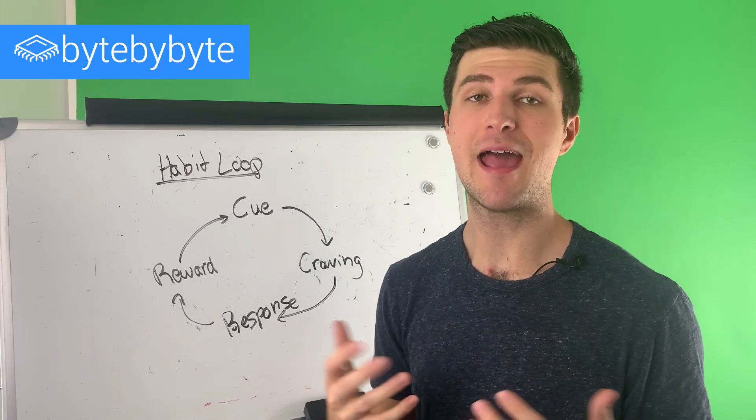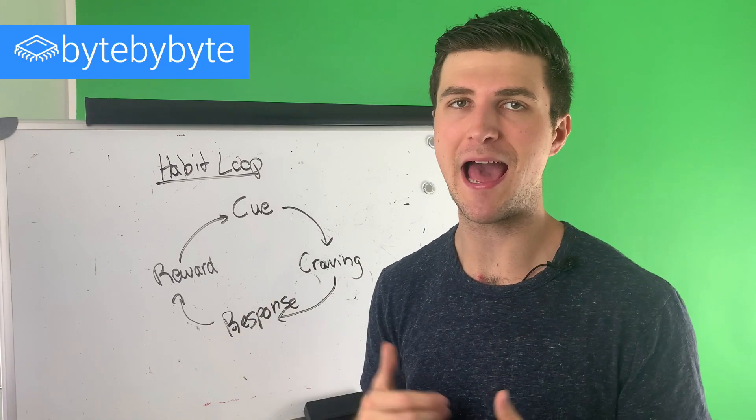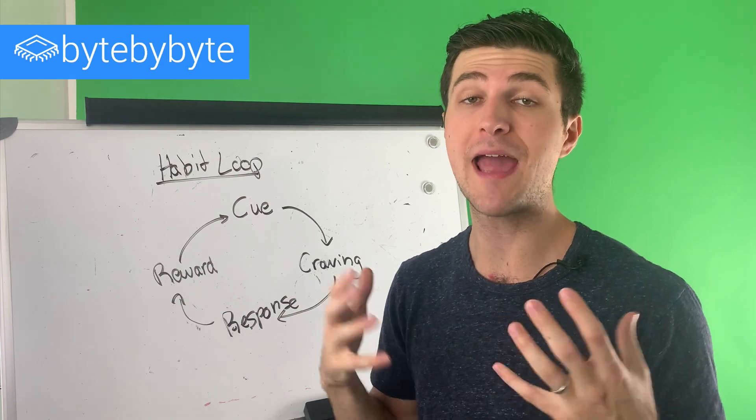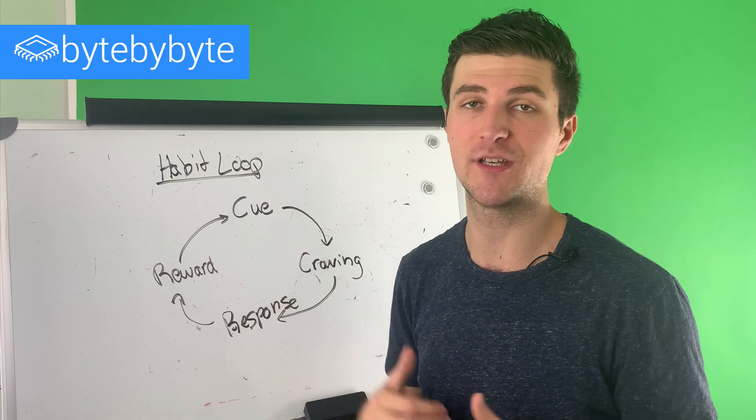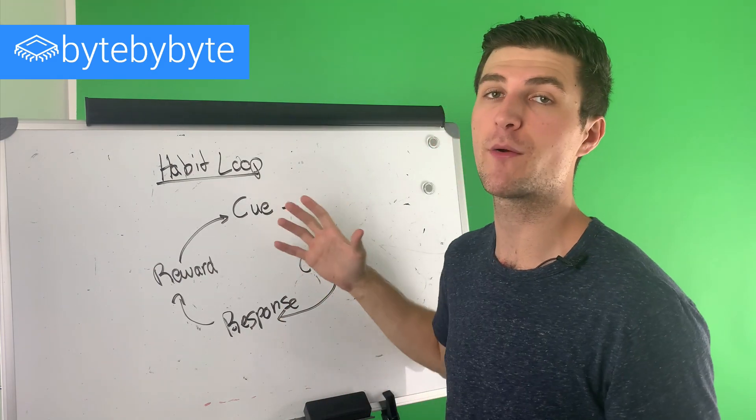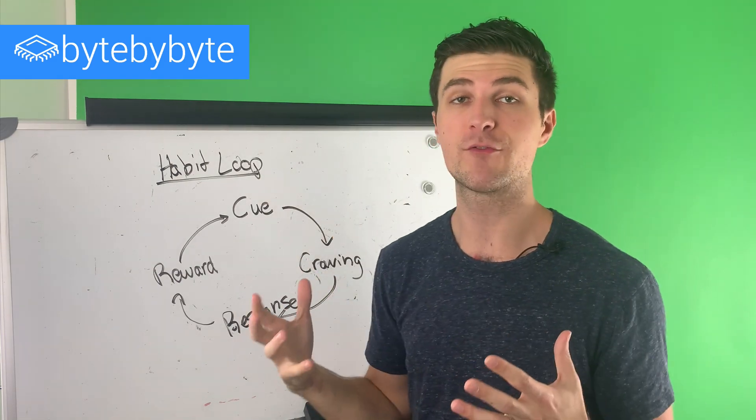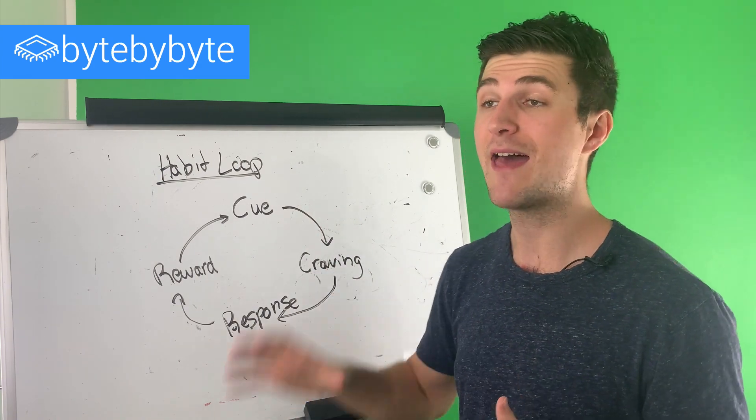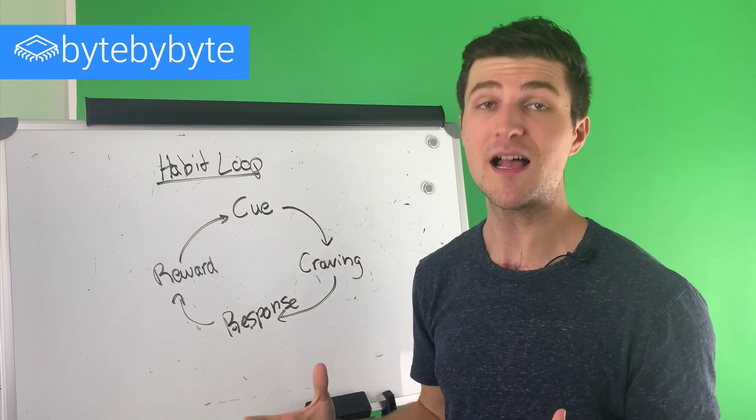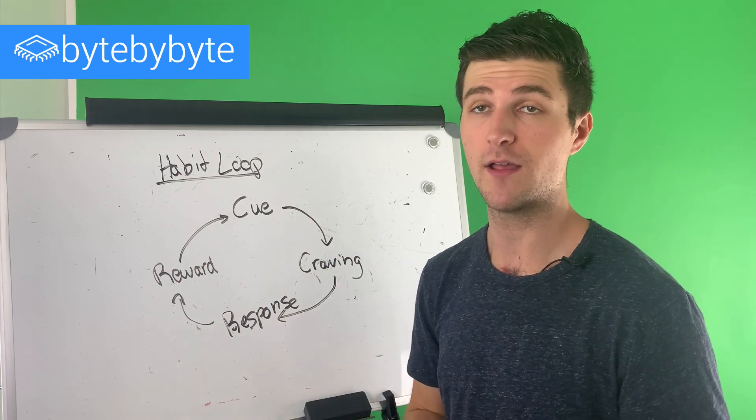So before we can get into how to actually make a consistent great habit for our coding interview prep, we have to actually talk about what creates a habit. What does that process actually look like? And here I want to share with you the habit loop. And this comes from the book Atomic Habits, which is a great book that you should check out about habits. And this basically defines the process that a habit follows.